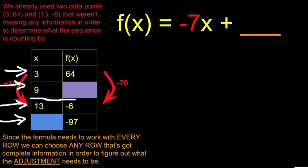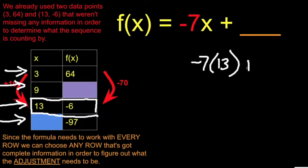It's got complete information. When x is 13, negative 7 times 13 plus that thing we're looking for. When x is 13, f of x needs to be negative 6 if this formula is going to work with that row. f of x is negative 6 when x is 13.